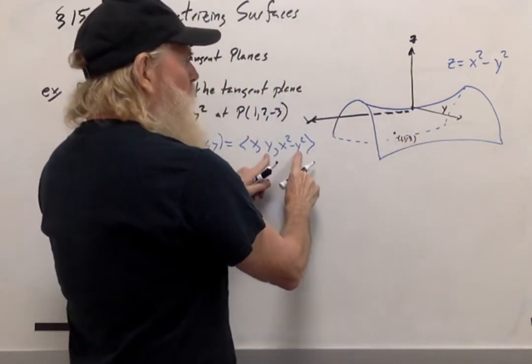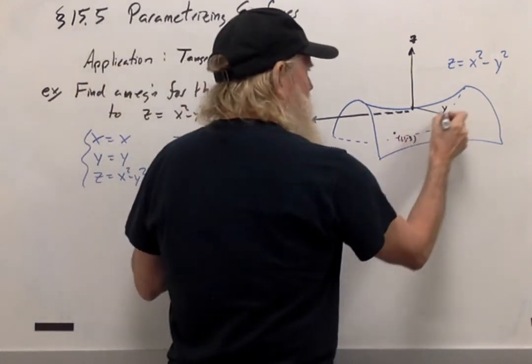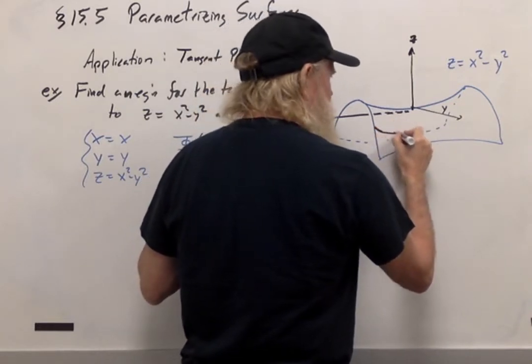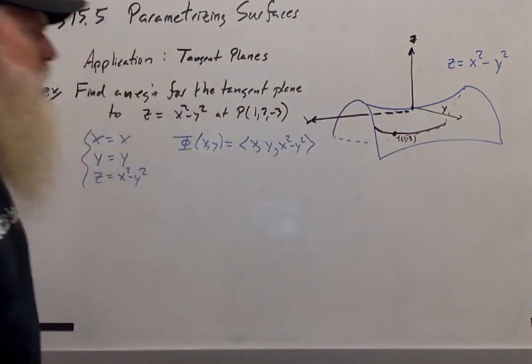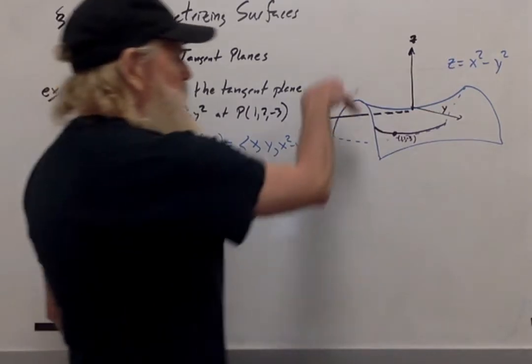Let's say that I hold y fixed and I let x vary. Well, that means that my y-coordinate is going to stay the same, and my x-coordinate is going to change. So that's going to take me along a curve, parallel to the x-z plane. And it's going to be a parabola.